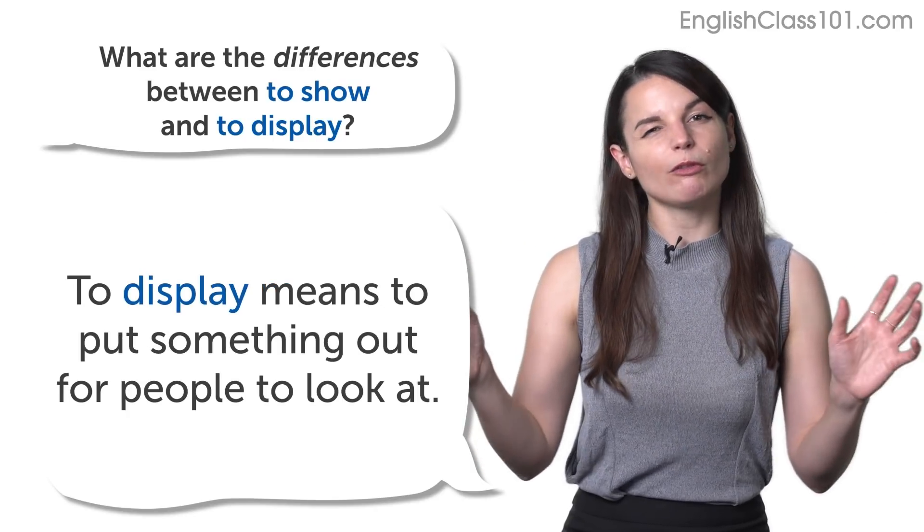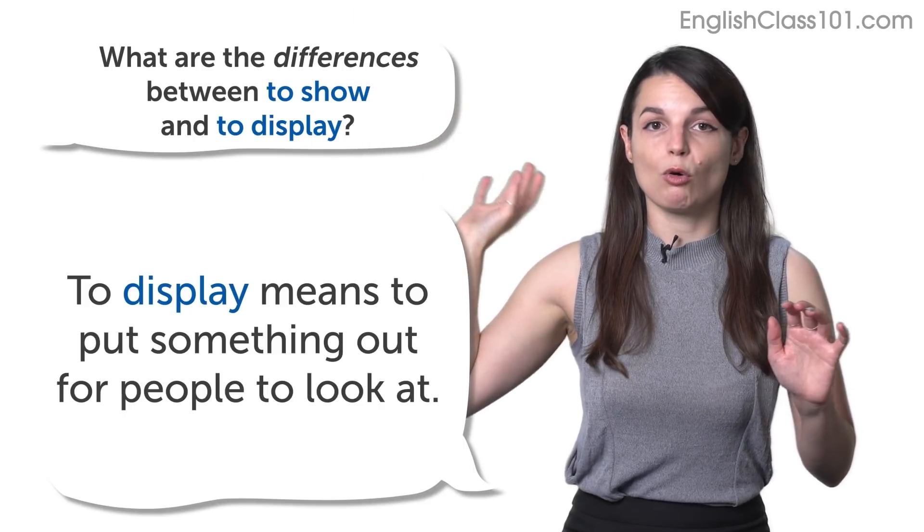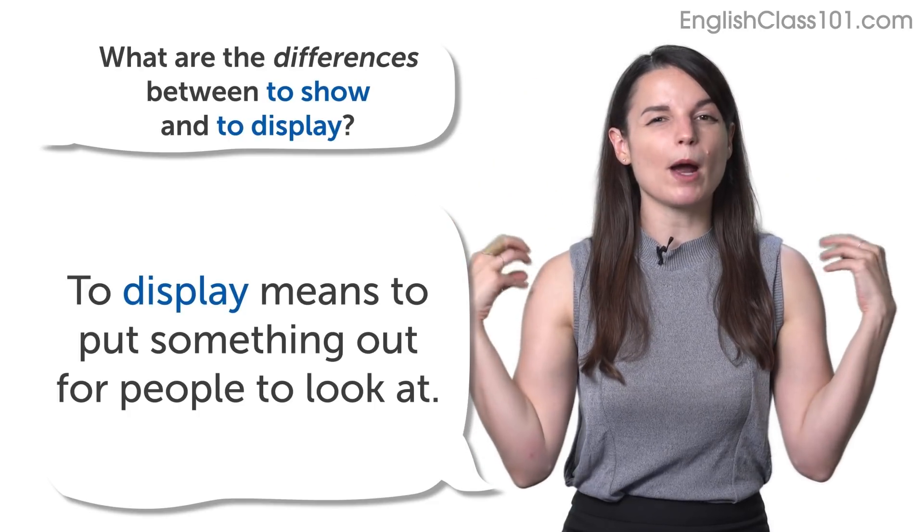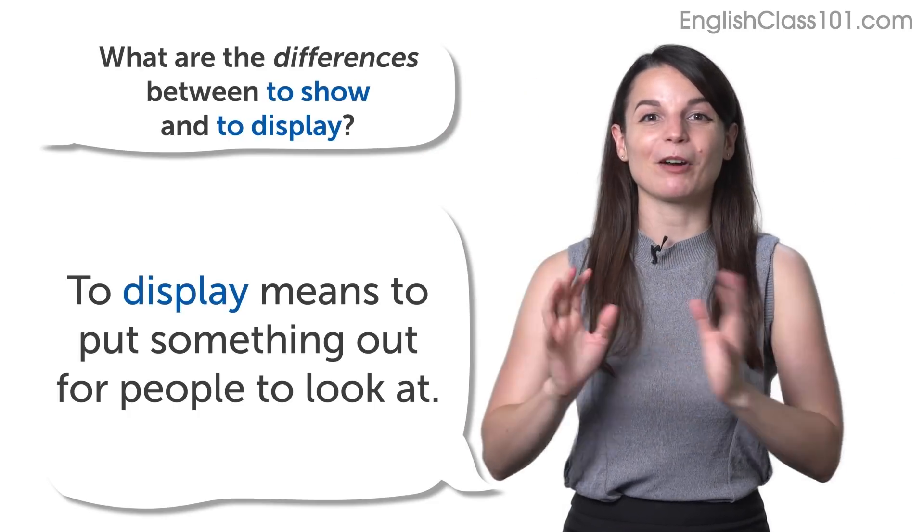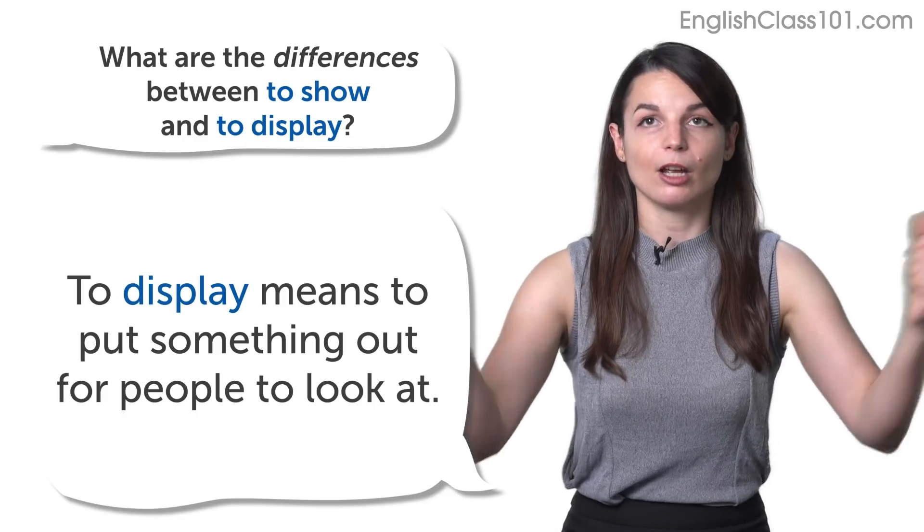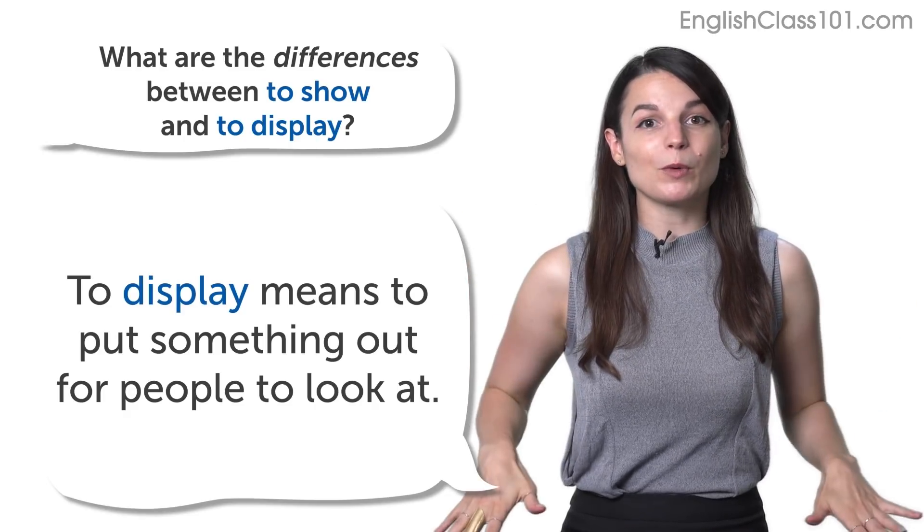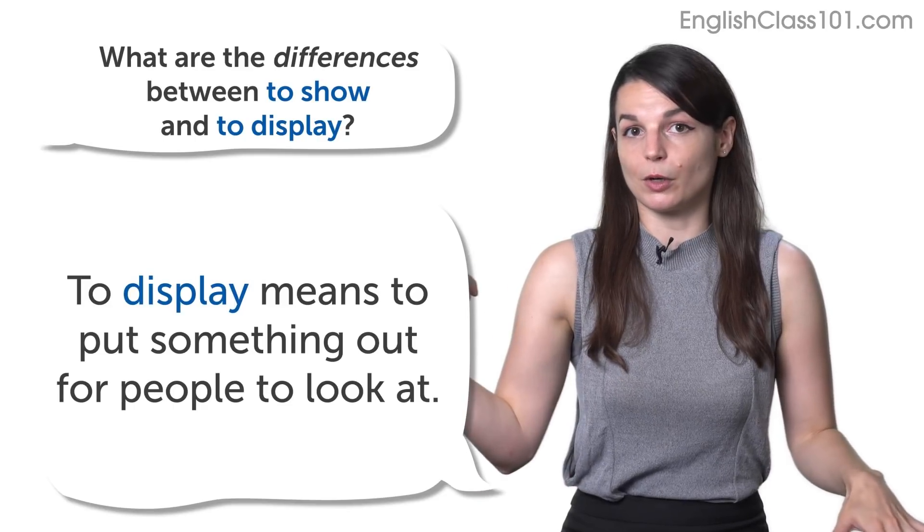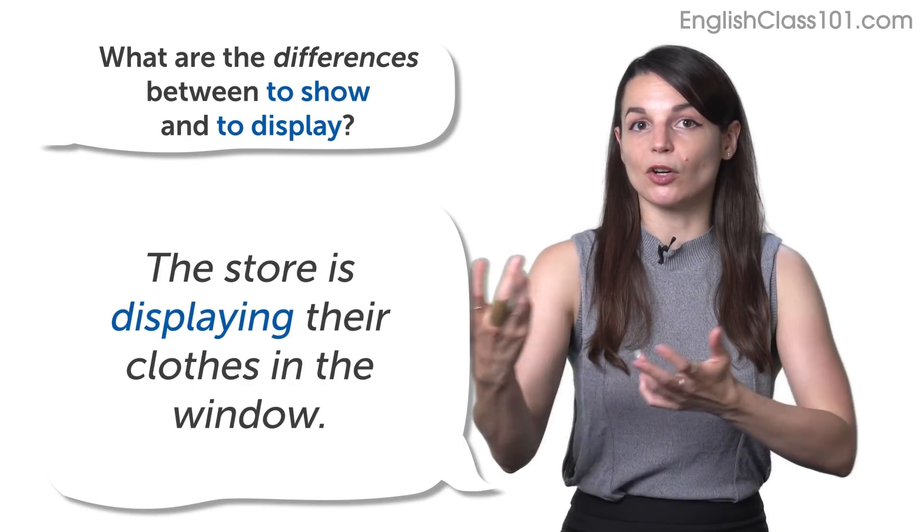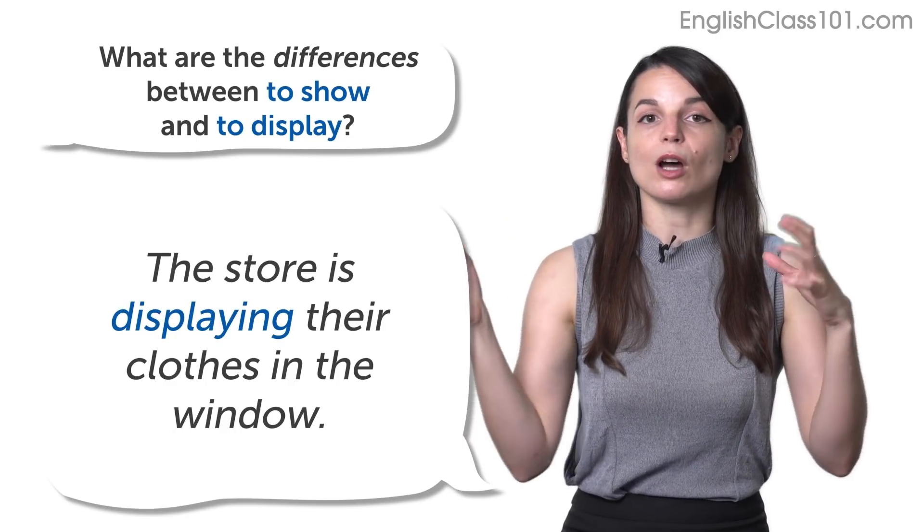To display, however, refers in most cases to putting something, for example, on a sign or on a billboard or on some other kind of announcement board where people can look at it. But there's not one person going around showing each person the information, right? To display something means simply to put something out for people to look at. For example, you probably see lots of mannequins. So, those bodies of people in front of store windows that are wearing the clothes on sale in the store. We could say, the clothes are on display or the store is displaying their clothes in the window.